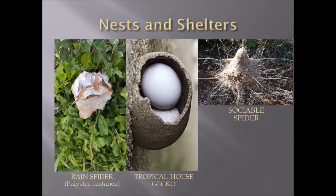Here we have various nests and shelters. On the left is a rain spider Palystes castaneus — a very large spider the size of a human hand — which produces its nest and lays its eggs in it and will guard them. In the middle is a tropical house gecko, which usually lays two eggs, having laid its eggs in a potter wasp nest. On the right is a sociable spider web — Stegodyphus — a small spider that occurs communally. There are also tropical tent caterpillars that do something similar.